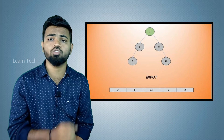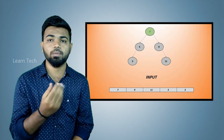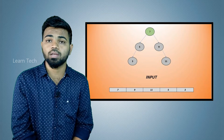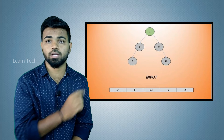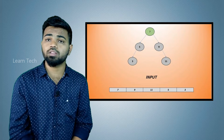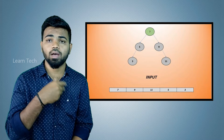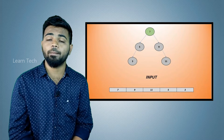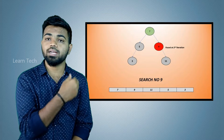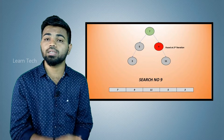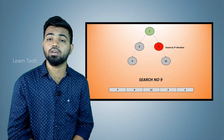Binary Search Tree. Now we go to the same search task — let's find number 9. First, check the root node — what is the root node? It is 7. Since 9 is greater than 7, we travel to the right-hand side. We find the root node 9 — found! We only needed 2 comparisons instead of 4.